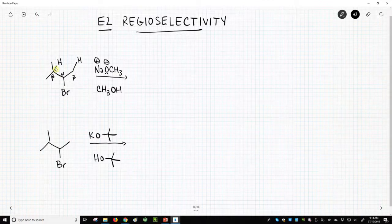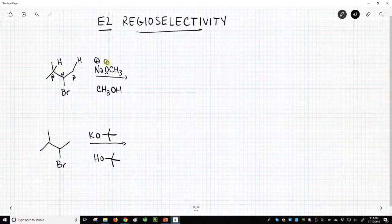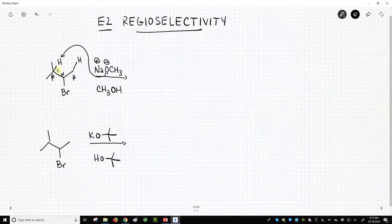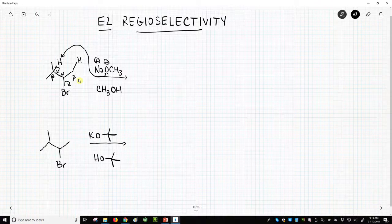Most often, in our typical bases, like methoxide and ethoxide, we get removal of the beta hydrogen on the more highly substituted beta carbon.